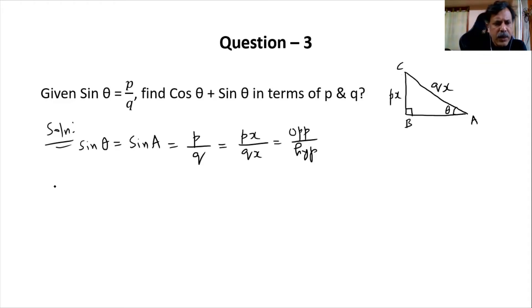Again, using Pythagoras theorem, we have hypotenuse square—that means qx the square—should be equal to opposite square, that is px the square, plus adjacent square AB the square. So what is this? Which means AB...